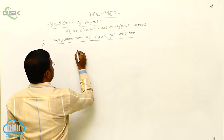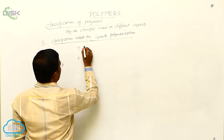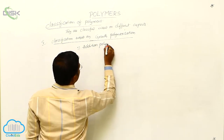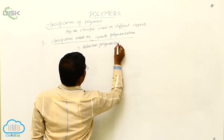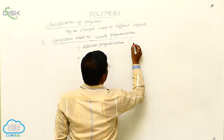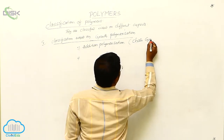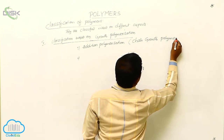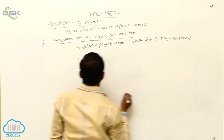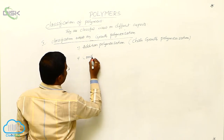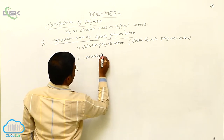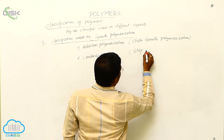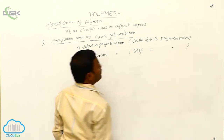During polymerization, there are two types of polymerization reactions. The first is addition polymerization, which is also called chain growth polymerization. The second is condensation polymerization, which is also called step growth polymerization.